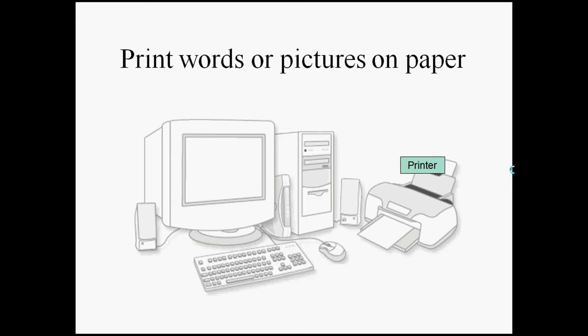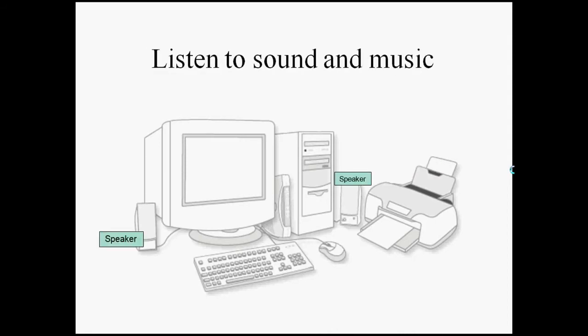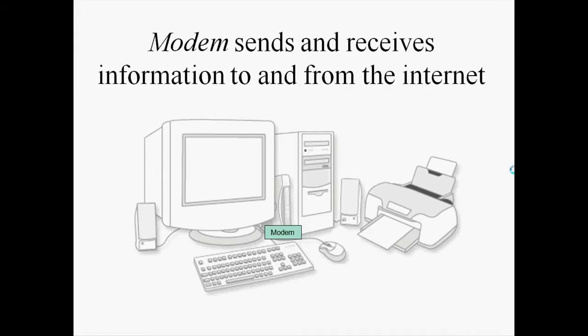You may have a printer nearby, or it may be across the room, but it's what prints the words and pictures that you type on paper. You might have some speakers, which are just like stereo speakers for voice, music, and other sounds. And somewhere there's a modem — a device that may not be visible to you, but there's some way to connect to the outside world or to a network. These days, mostly it's a connection to the World Wide Web or the Internet.